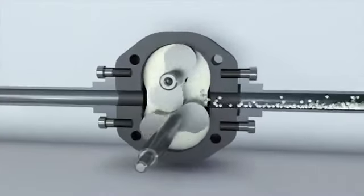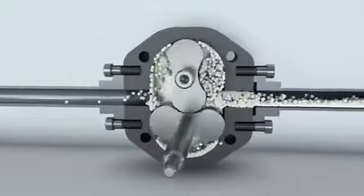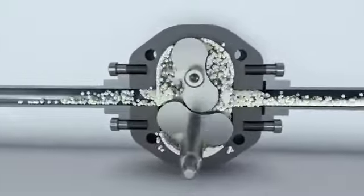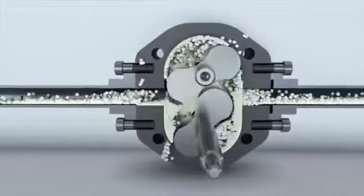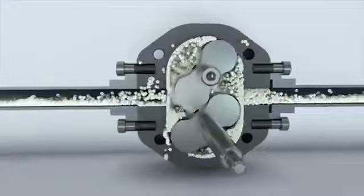Lobe pumps are often used in the food industry for pumping syrups, fruit purees, molasses, condensed milk, and even cottage cheese. Only pumps made of special stainless steel and other safe materials are suitable for handling food.